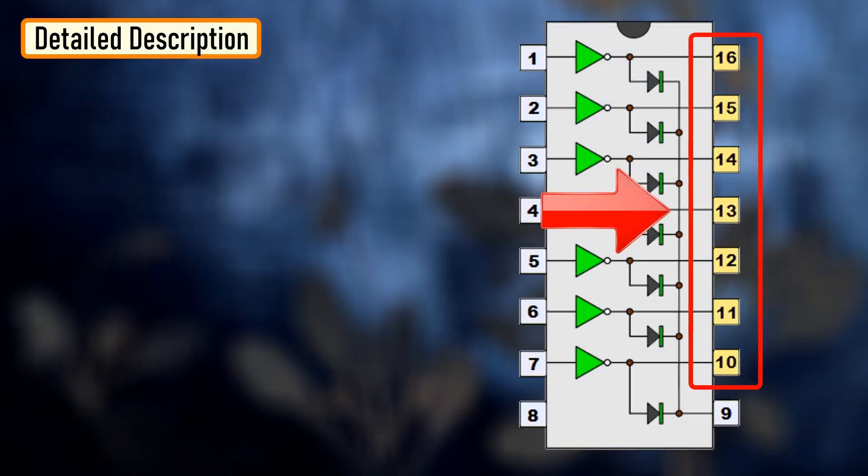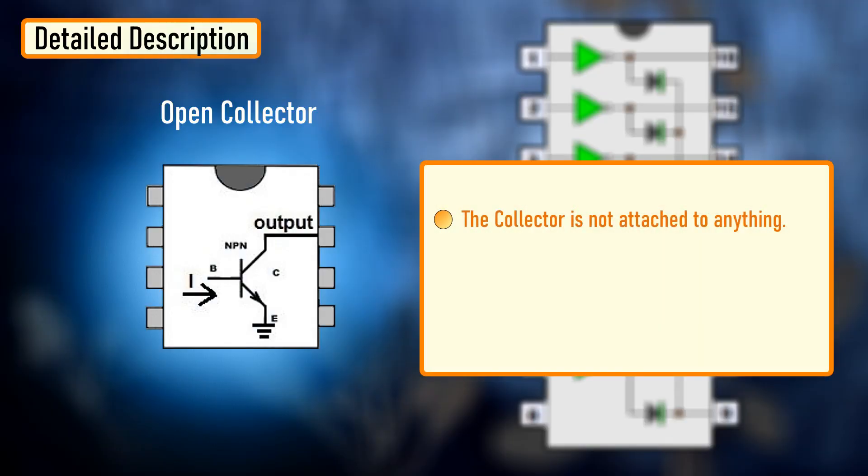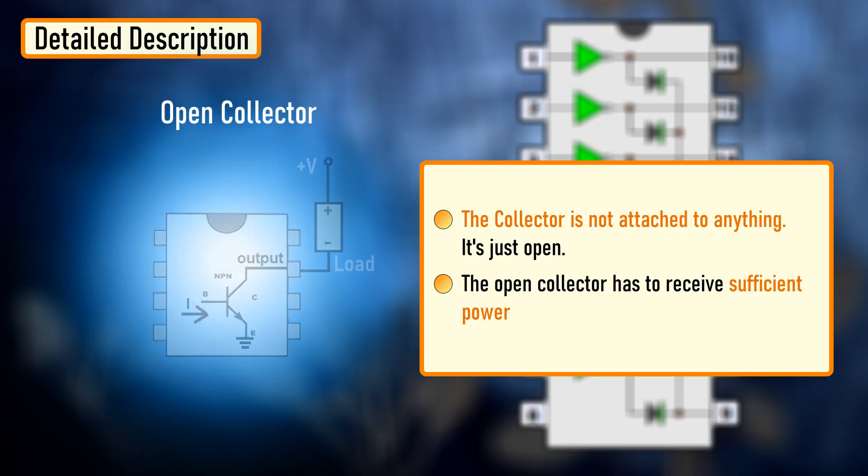The 7 outputs are all open collector. By open collector, we mean a collector that is not attached to anything. It's just open. In order for an open collector output device to work, the open collector has to receive sufficient power. In order for an NPN transistor to work, the collector and base both need to receive sufficient power. The base turns the transistor on and then a much greater current flows from the collector to emitter, but only if the collector has sufficient positive voltage.